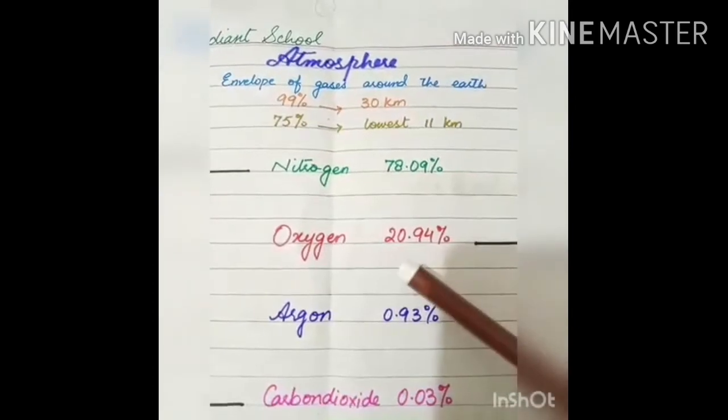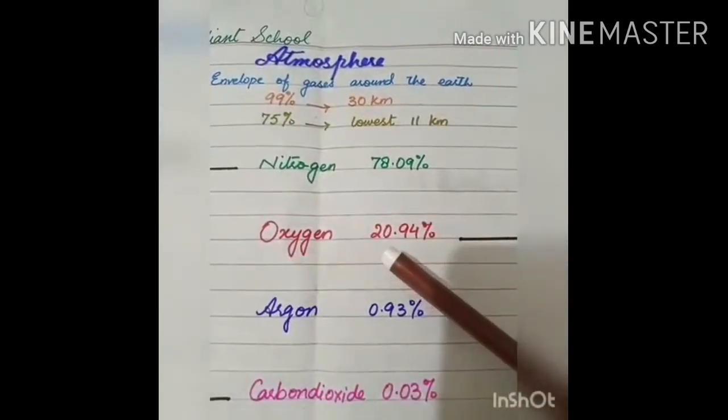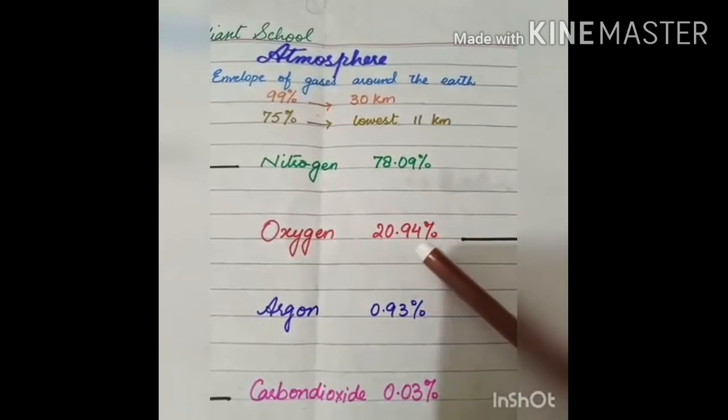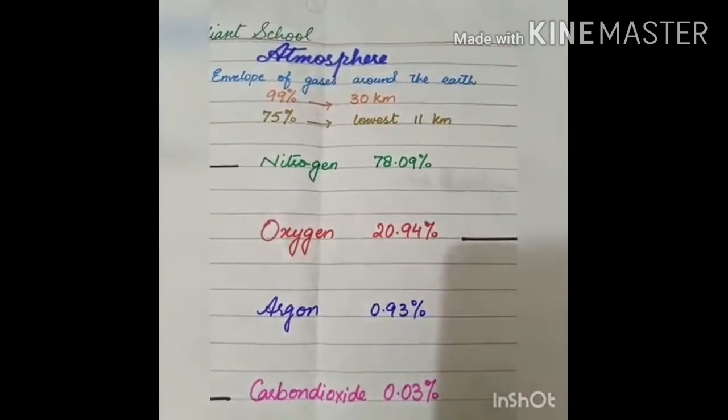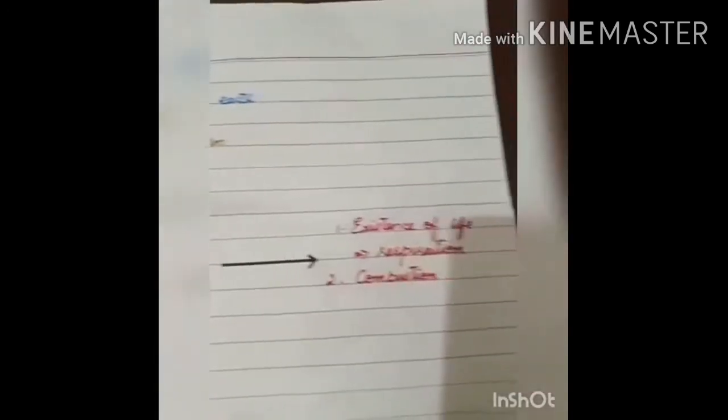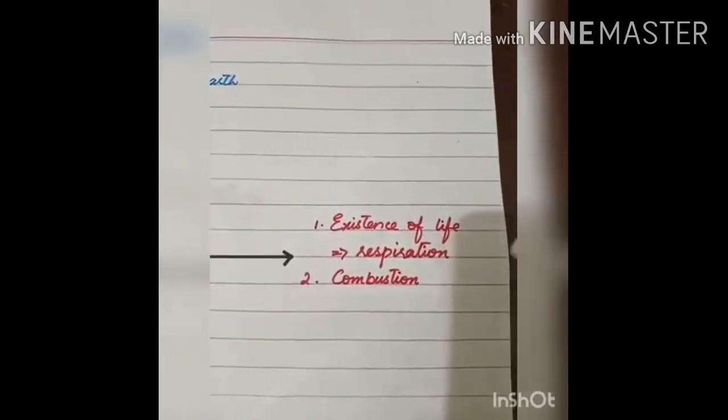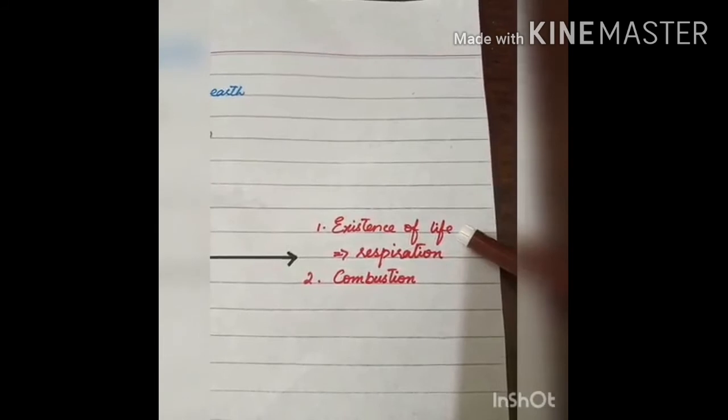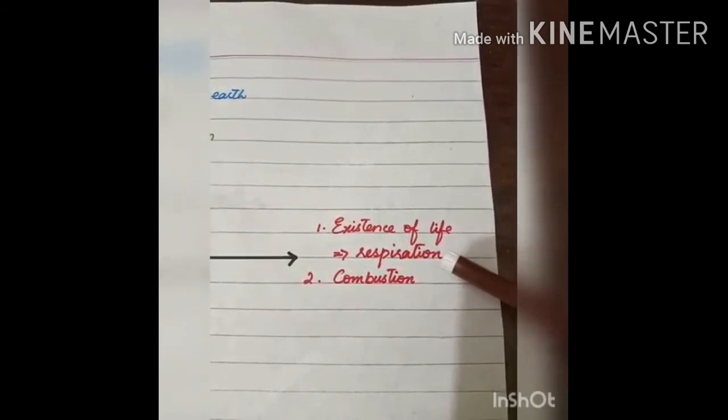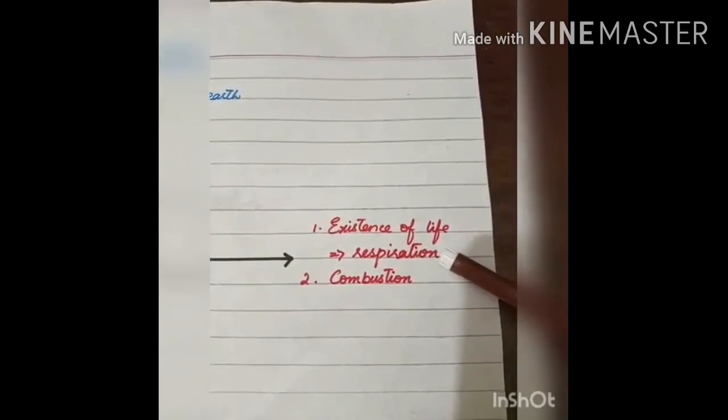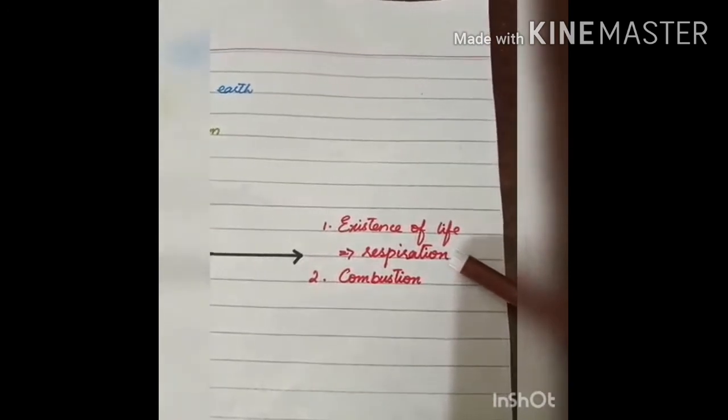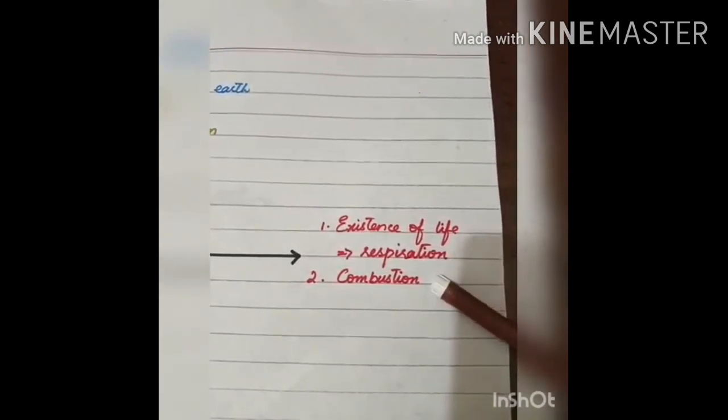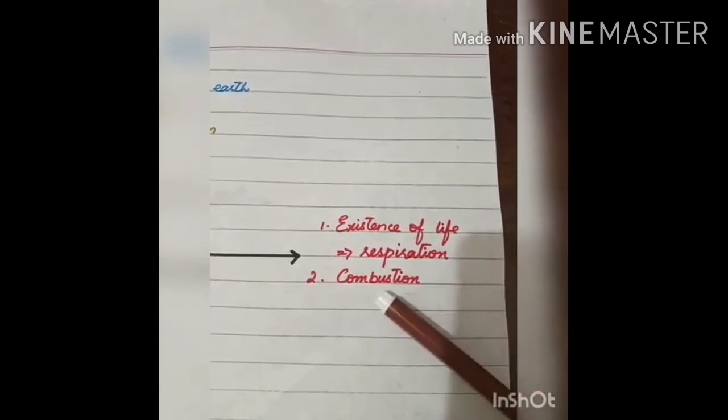Next is the importance of oxygen gas. Its composition is 20.94% in the atmosphere. It is important gas in the atmosphere and it is important for the existence of life on earth. Because this gas is used in the process of respiration by plants and animals. The second and important use of oxygen gas is it helps in the process of combustion.